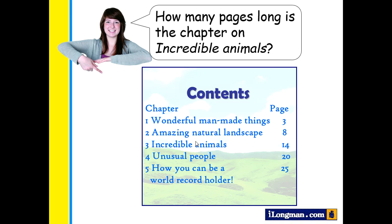Next question: how many pages long is the chapter on incredible animals? Incredible Animals starts on page 14. The next chapter, Unusual People, starts on page 20. So Incredible Animals goes from page 14 to 19 and is a total of six pages.